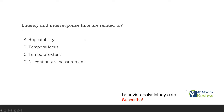Latency and inter-response time are related to what? Repeatability refers to rate or count. Temporal extent refers to duration. Temporal locus — a location in time — refers to latency and inter-response time. It makes sense: latency is the time between an SD and a response — a location in time. Inter-response time is the time between responses — also a location in time. So latency and inter-response time are related to B, temporal locus.